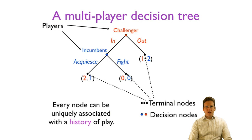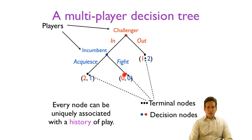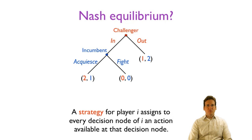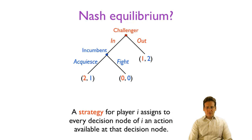Notice that for every node, we can associate a history of the game. For example, we got to this node by the challenger choosing 'in' and the incumbent choosing to fight — and that's really the only way we can get to this node. For every node in an extensive form game, we can associate such a unique history. So what's a Nash equilibrium in a game like this? A Nash equilibrium is a combination of strategies such that neither player can do better by unilaterally deviating, assuming the other player sticks to the same strategy.